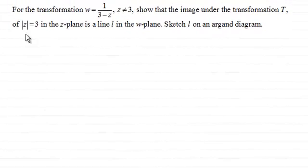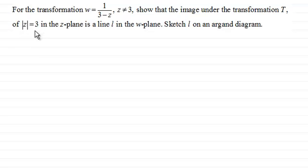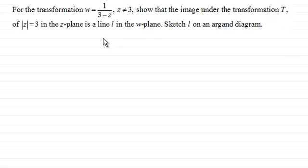Hi there. In a previous video I showed you how we could do this question by considering the modulus of z equaling 3. I want to do this question again and show you an alternative method which is often used, and that is by comparing real and imaginary parts. As a reminder, we'll read through the question first of all. For the transformation w equaling 1 divided by 3 minus z, z not equaling 3, show that the image under the transformation of the modulus of z equaling 3 in the z plane is a line L in the w plane, and sketch L on an Argand diagram.